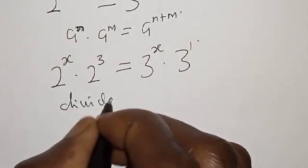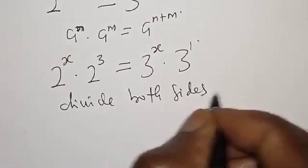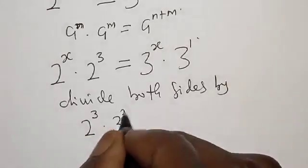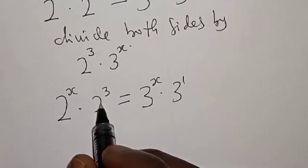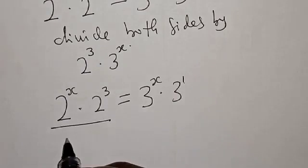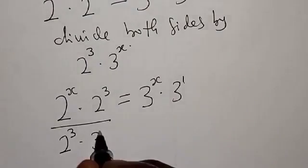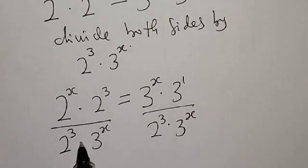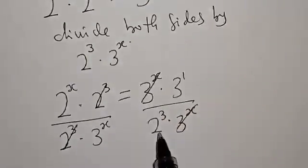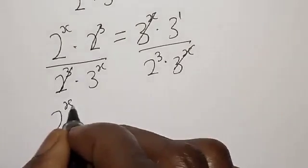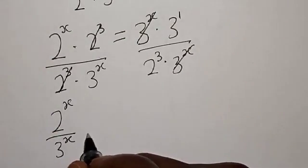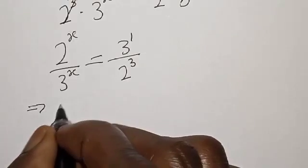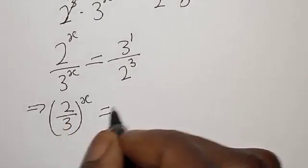Now let's divide both sides by 2 raised to power 3 multiplied by 3 raised to power x. After cancellation, we are left with 2 raised to power x divided by 3 raised to power x is equal to 3 raised to power 1 divided by 2 raised to power 3.